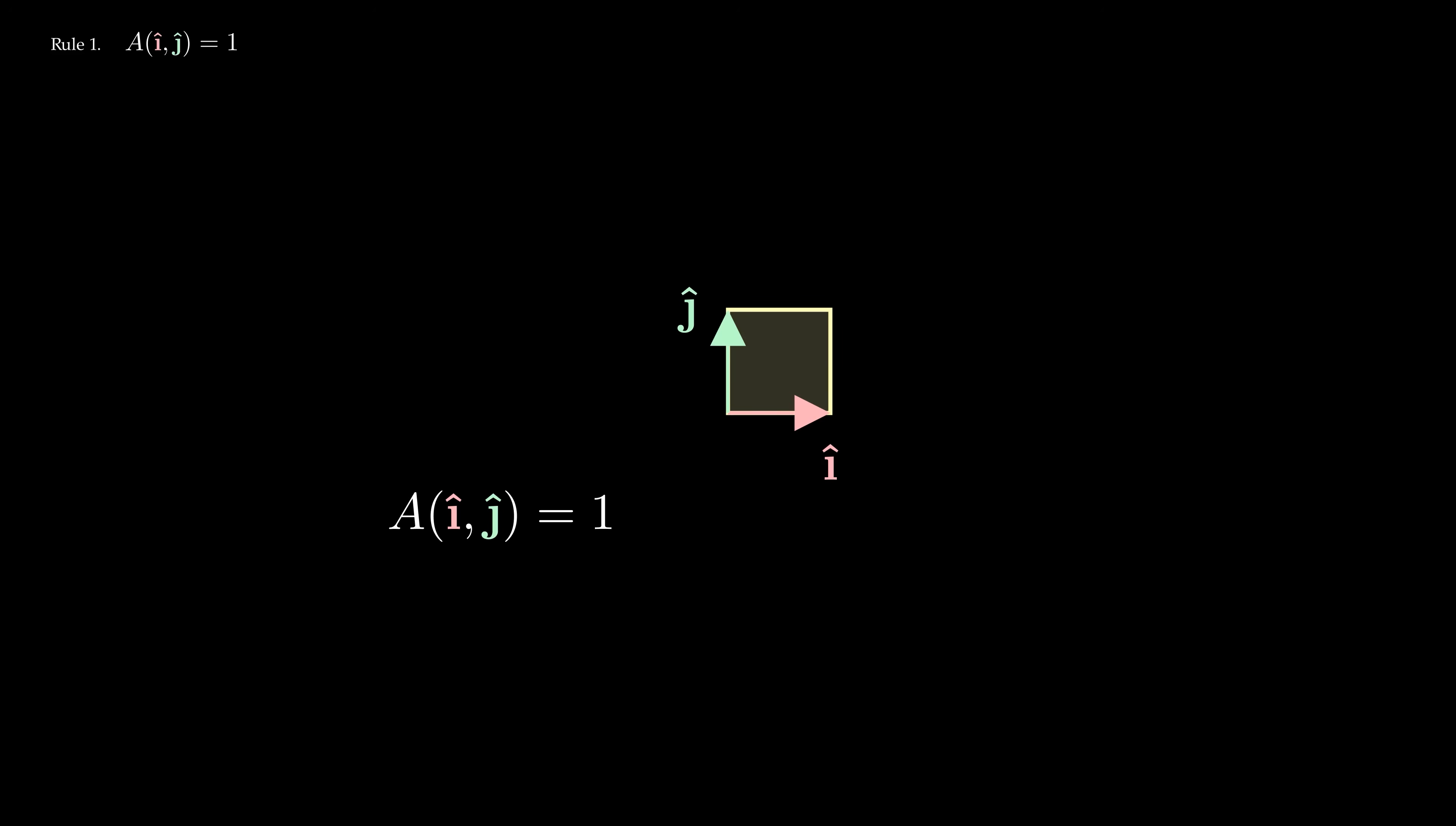What other rules does area satisfy? Well, there's a rule that feels so trivial that we often ignore it. If you bring the two vectors together so that they lie on a straight line, then your parallelogram gets squished and ends up with zero area. But this turns out to be an important rule as well.